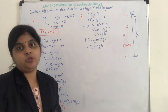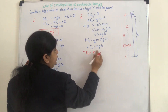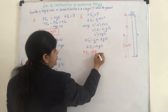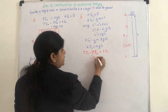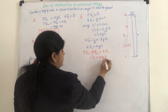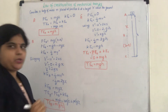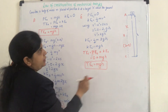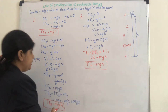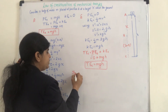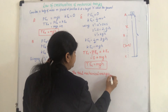Now the total energy at point C = potential energy at C + kinetic energy at C = 0 + MGH = MGH. So we have proved that at points A, B, and C, wherever we calculate the total energy, every time the total mechanical energy remains constant and equals MGH. This proves the law of conservation of energy.